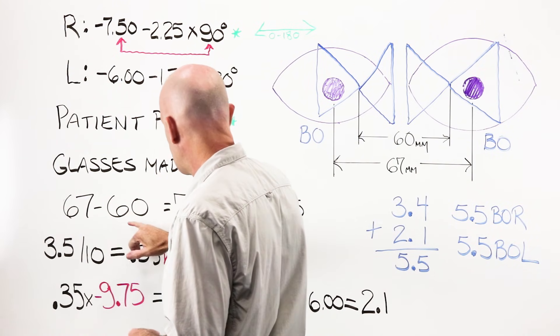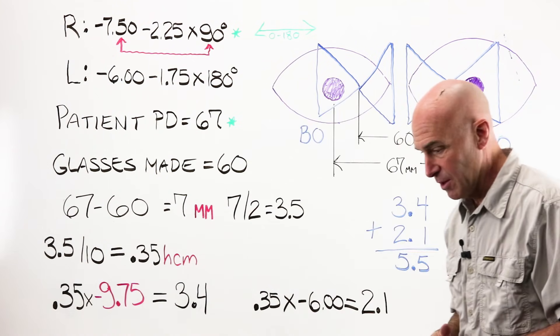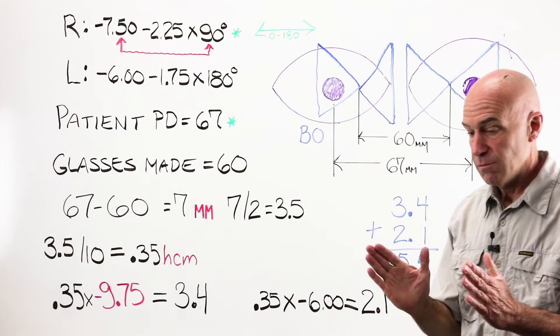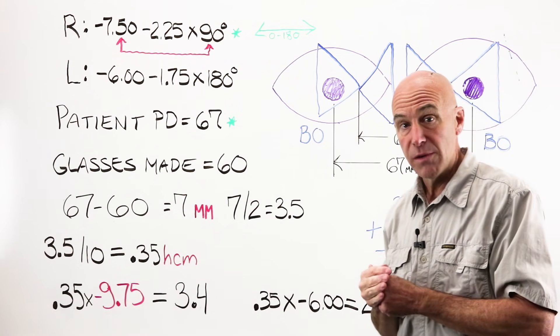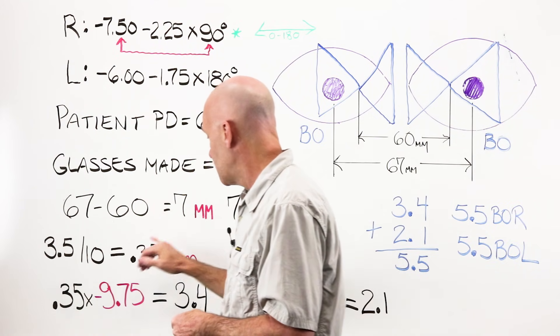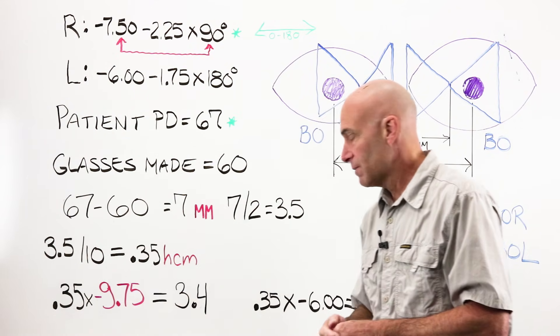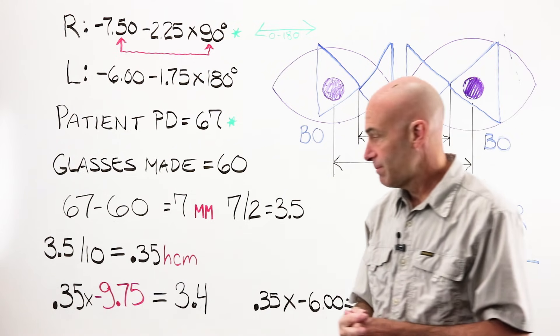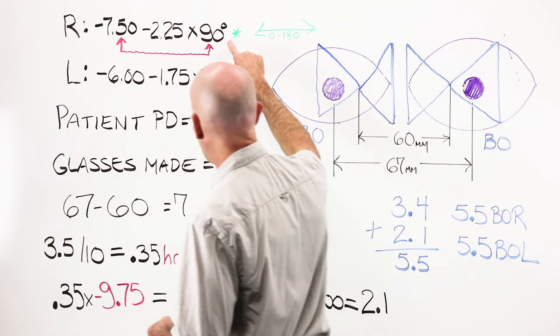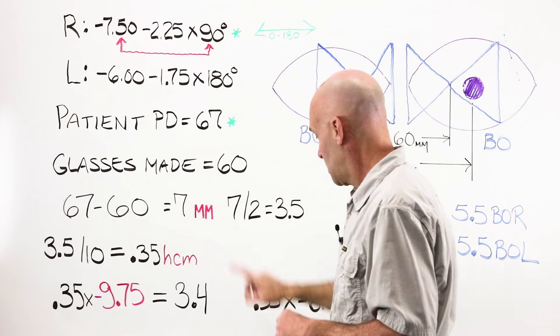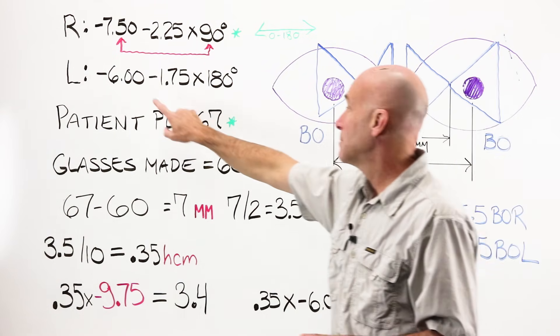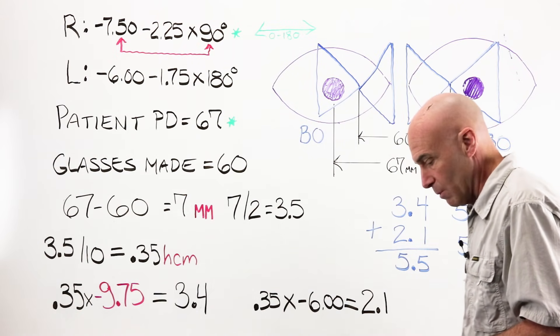If I take away my 67, my 60, I have seven millimeters of difference. Two eyes. Seven divided by two means that my lenses have moved three and a half millimeters away from where they need to be. Three and a half divided by ten converts my millimeters to my centimeters. So I've got .35. Now I can take my .35 and multiply it times my 9.75 at 180. And I get 3.4. I can take my .35 and multiply it times my 6, which gives me 2.1.